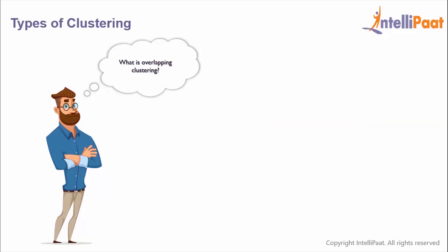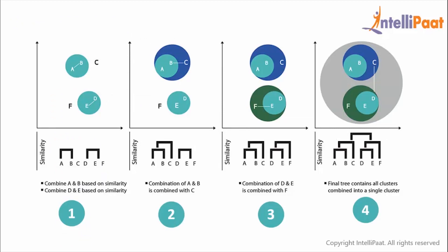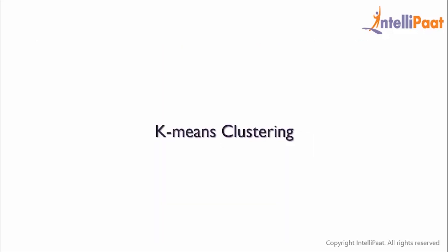Next we have overlapping clustering. In this case some of the data points belong to multiple groups. As you can see here, some of the orange and purple triangles belong to both groups and are represented in green color. Then we have hierarchical clustering. This algorithm starts with all the data points assigned to a cluster of their own, then the two nearest clusters are merged into the same cluster. In the end this algorithm terminates when there is only a single cluster left. As you can see here, A and B and D and E are combined based on some similarities. In the next step, the combination of A and B is quite similar to C and hence grouped in one cluster. Similarly, the combination of D and E is similar to F and hence grouped in one segment. Finally, in the fourth step we see that the final tree includes all the clusters combined into one single cluster.